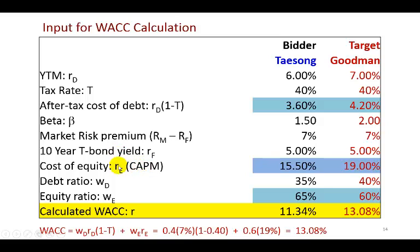Using CAPM to calculate the cost of equity: it comes out to be 19%. That equals the risk-free rate of 5% plus the market risk premium of 7% multiplied by the beta of 2, giving 14%; adding 14% to 5% yields the CAPM cost of equity of 19%. The target firm's debt ratio is 40% and equity ratio is 60%. Putting these into the WACC formula, the target firm's WACC is 13.08%.